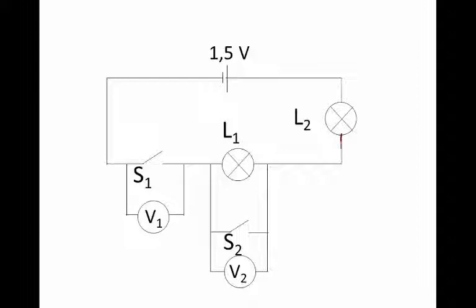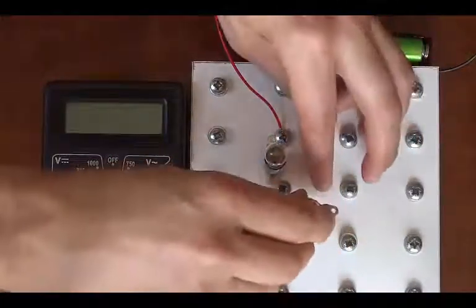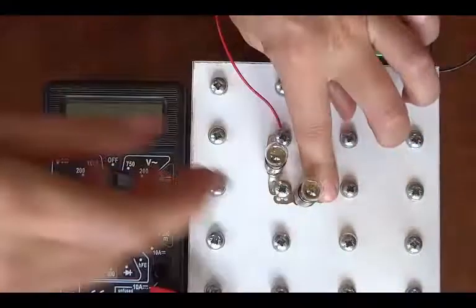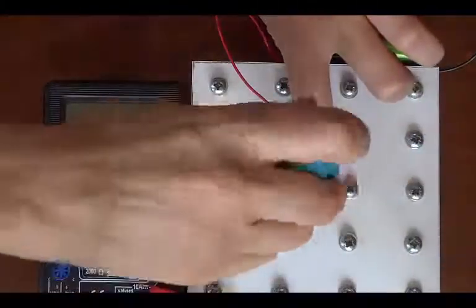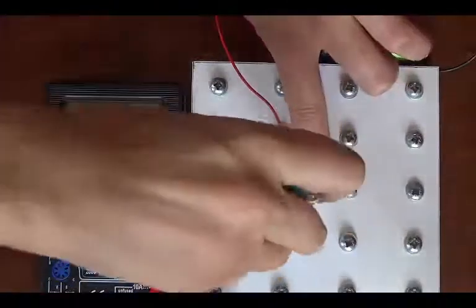The other side of L2 must be connected to the other bulb, L1. Here's the other bulb. Again, we screw it into the bulb holder, and we can simply use the same connection there, the same screw, and just tighten it nicely.